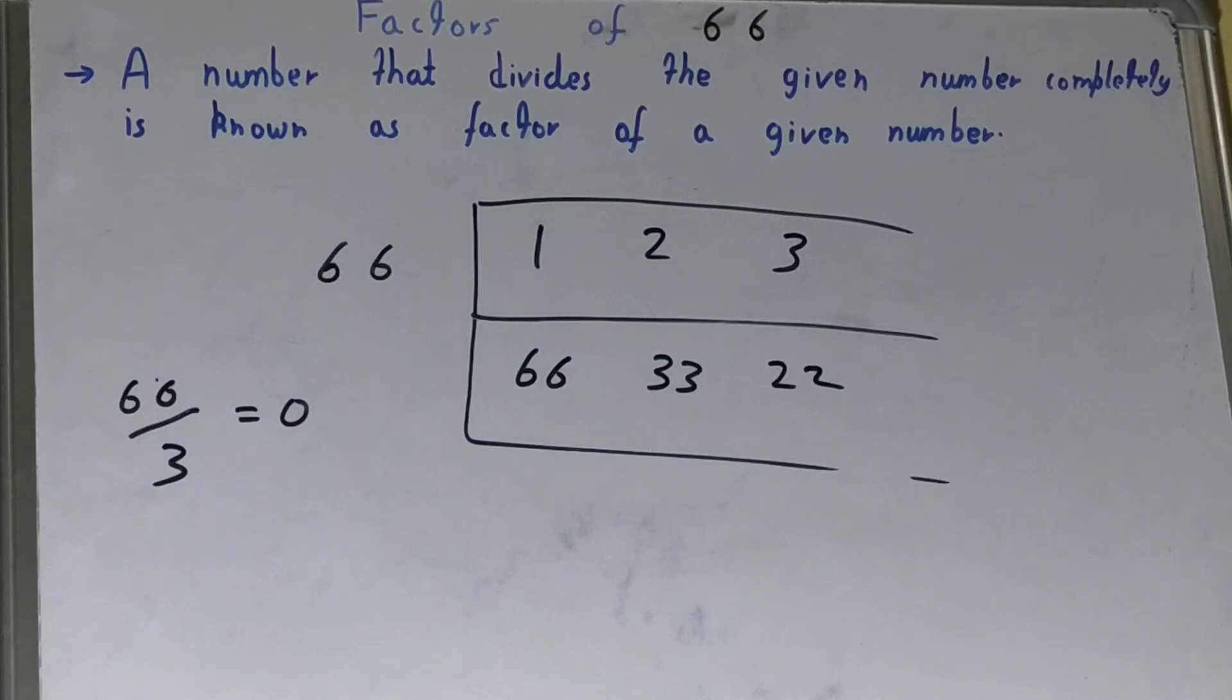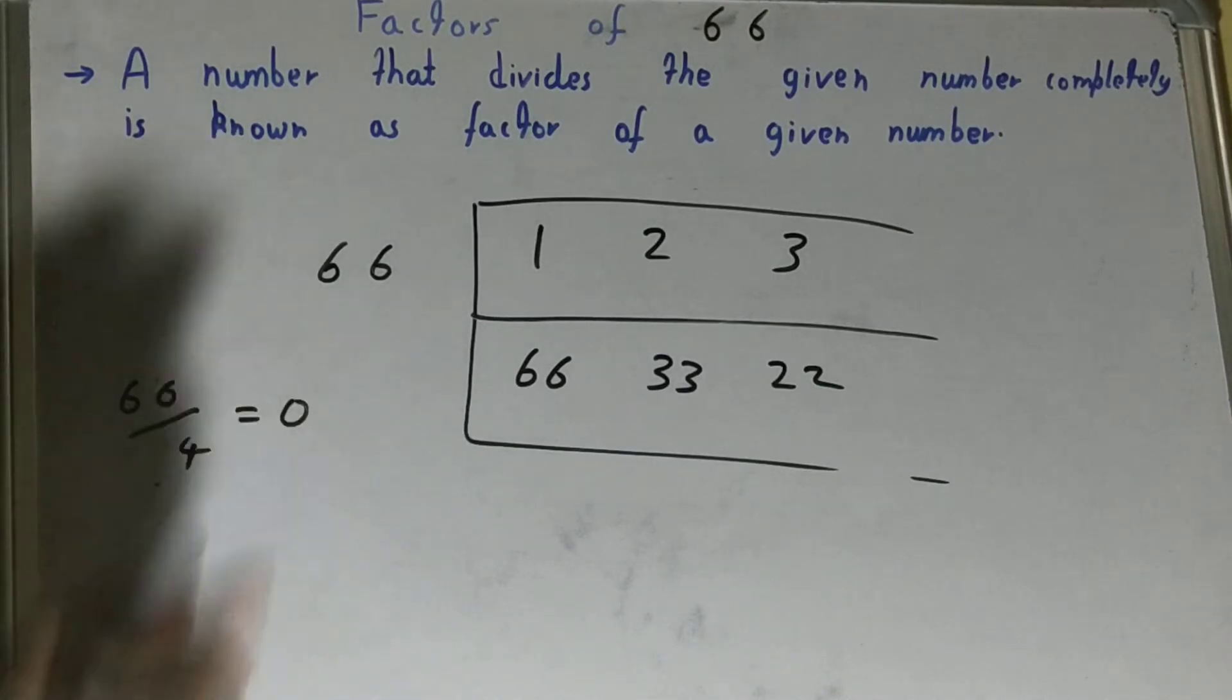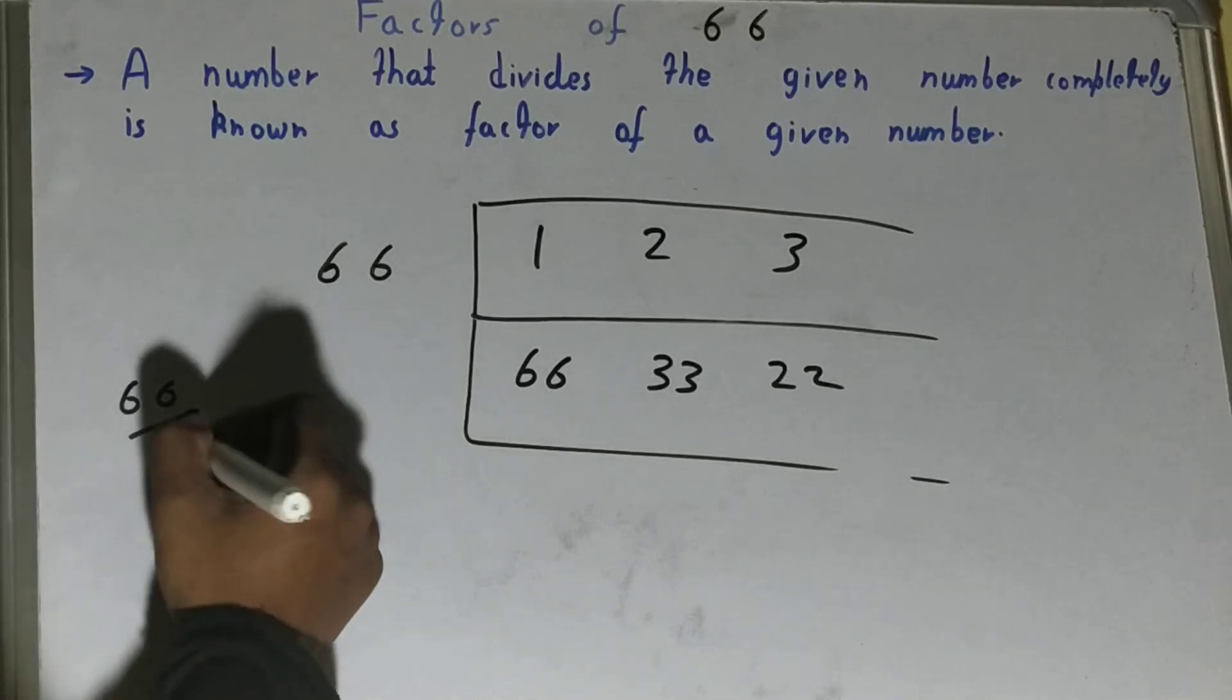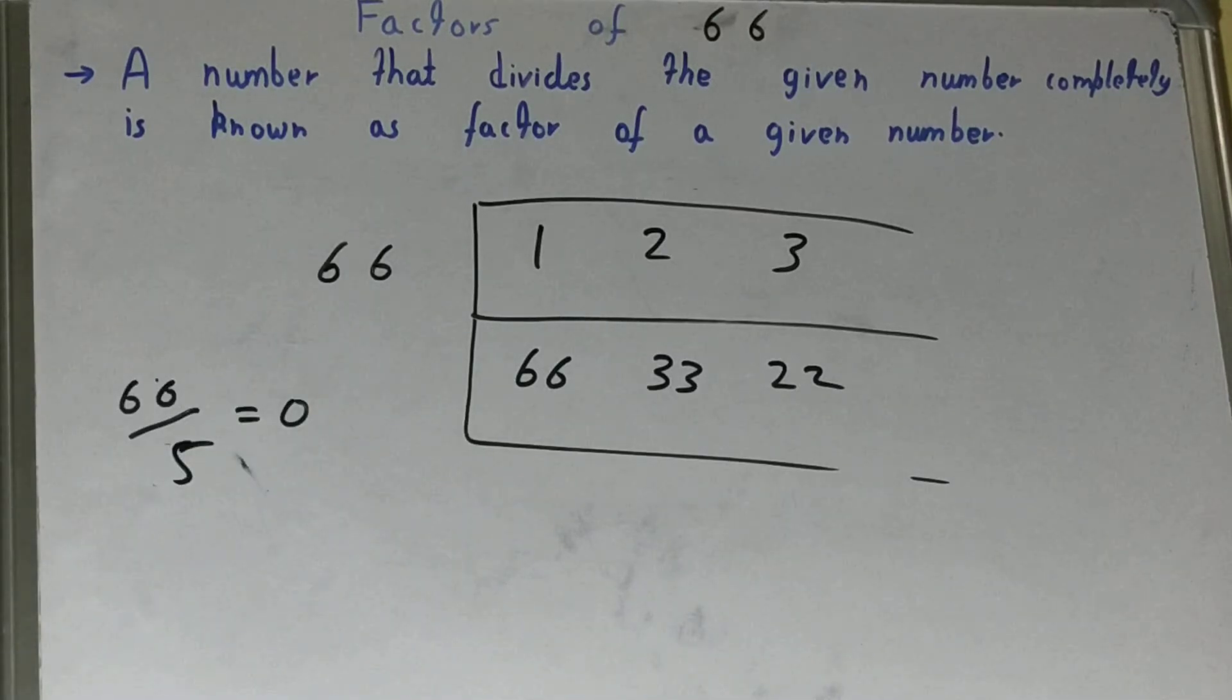After 3 comes 4. Will you get the remainder zero? No, you'll get the remainder as 2, so 4 is not a factor. After 4 comes 5. Will you get the remainder zero? No, you'll get the remainder 1, so 5 is also not a factor.